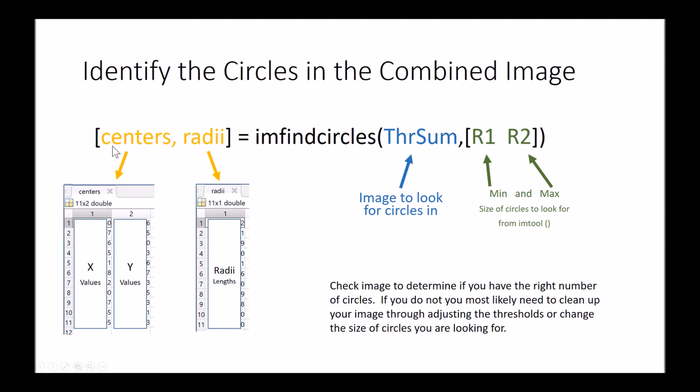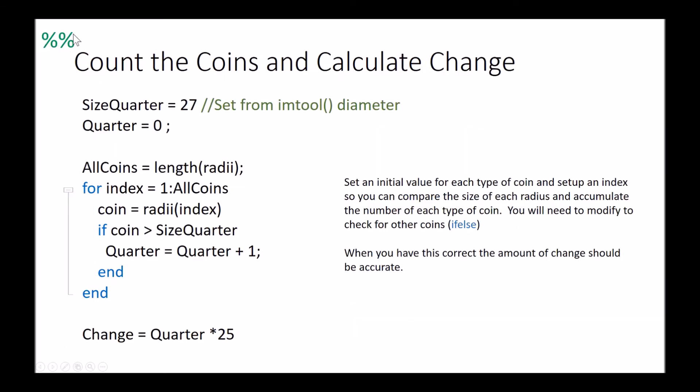We're then going to get centers and radii in two different setups. The centers is going to be a matrix that is two by eleven and the radii is just going to be eleven values. That's giving us the x and y location and the radii size. I can then start a new section, so once that's happened I can see that I have those values.